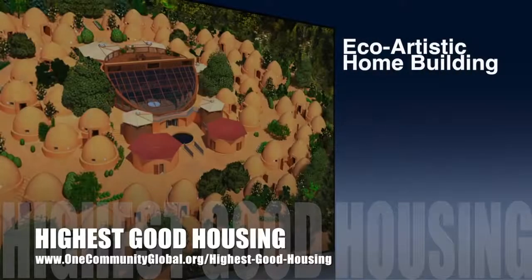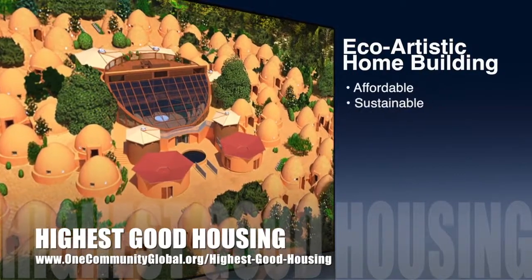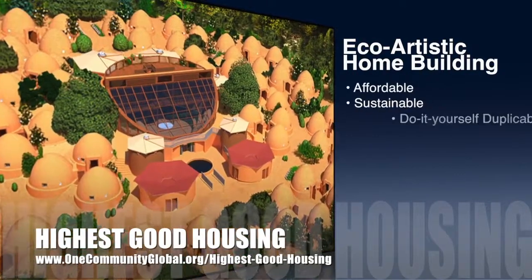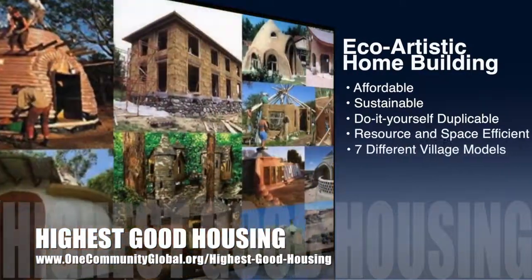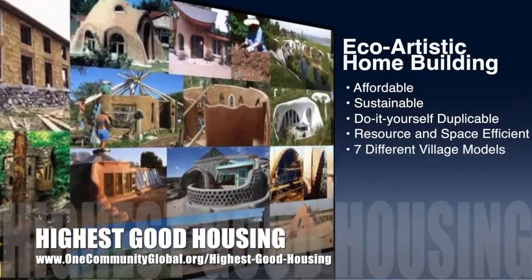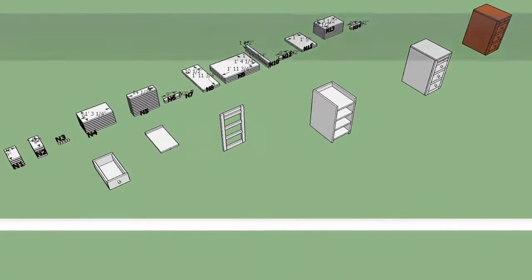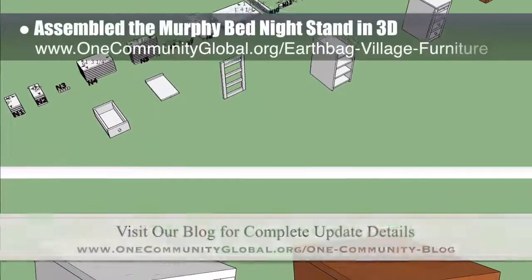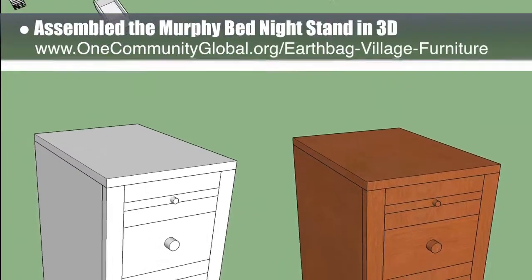One Community's approach to highest good housing is eco-artistic home building that is affordable, sustainable, do-it-yourself, duplicable, resource and space efficient, and consists of seven different sustainably constructed village models. This week the core team updated and reassembled the murphy bed nightstand in 3D to double-check parts changes and test the newest assembly instructions.